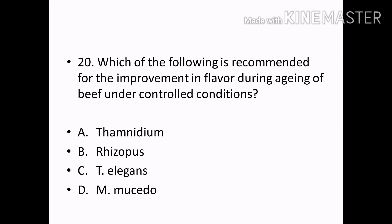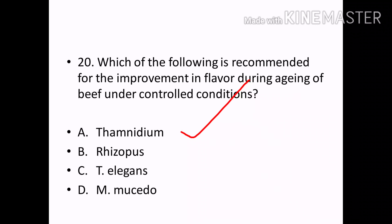Which of the following is recommended for the improvement of flavor during aging of beef under controlled conditions? Options — Thaminidium, Reservus, Elegans, Musido. Correct answer: Option A — Thaminidium.